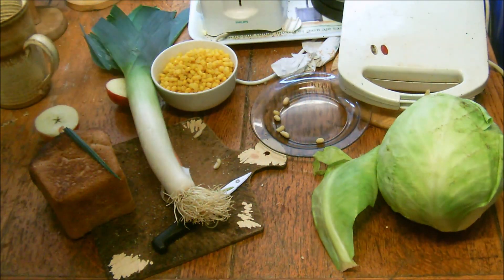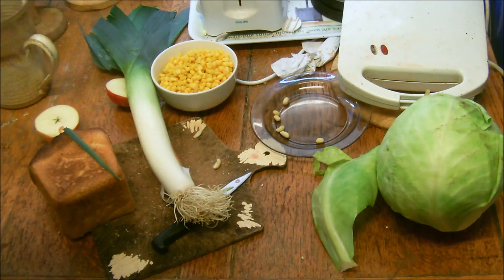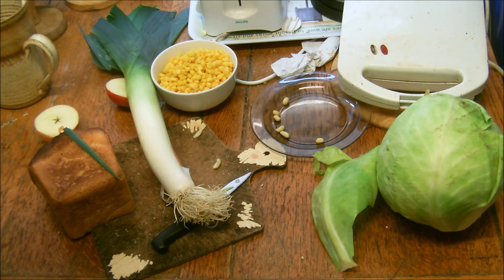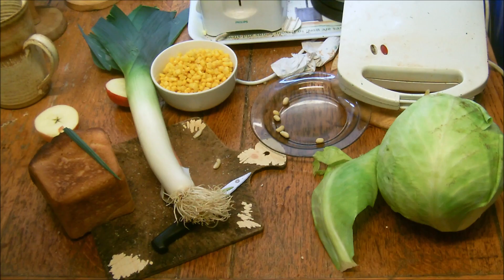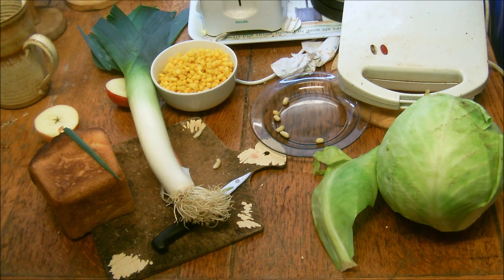Although all flowering trees are dicots, there are some false trees such as palm trees, bamboo, and banana trees which appear to be trees but are not in fact woody. The reason for that is because they have a different arrangement of vessels in their stems.